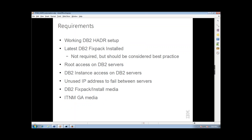The requirements are a working DB2 HADR setup. If you don't have that, follow the links on the previous page. The latest DB2 fix-pack installed — that's not a requirement but should be considered best practice. For today, we'll be installing Systems Automation from the DB2 fix-pack installation media. You'll need root access and DB2 instance access on the DB2 servers, an unused IP address that will failover between the servers following the active database, the DB2 fix-pack or install media, and possibly the IT&M GA media.